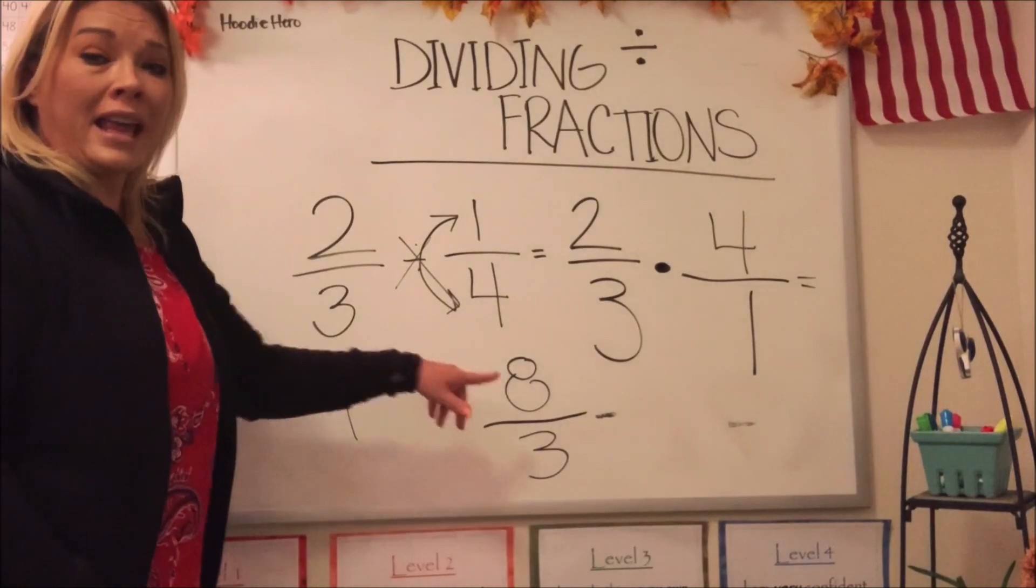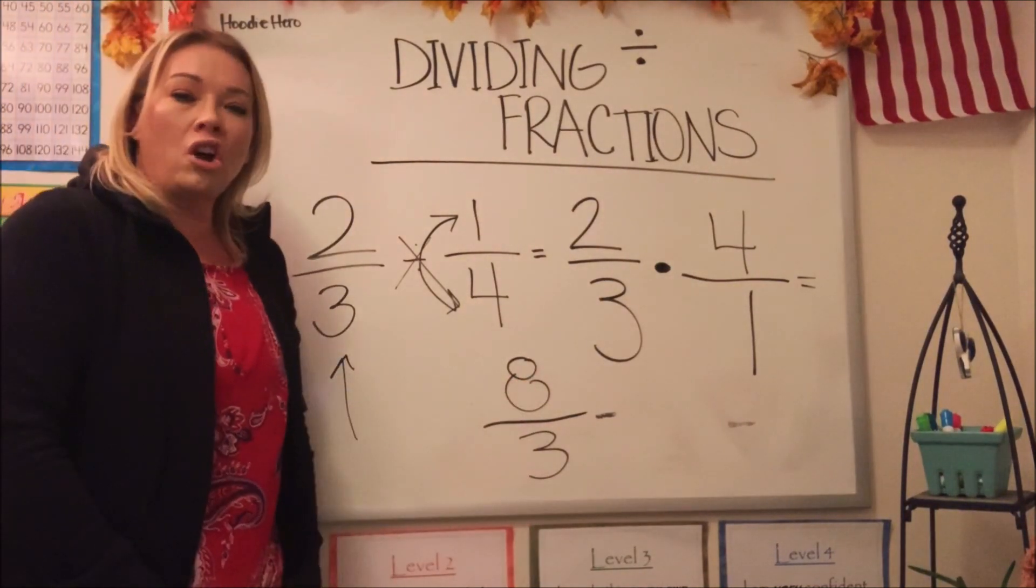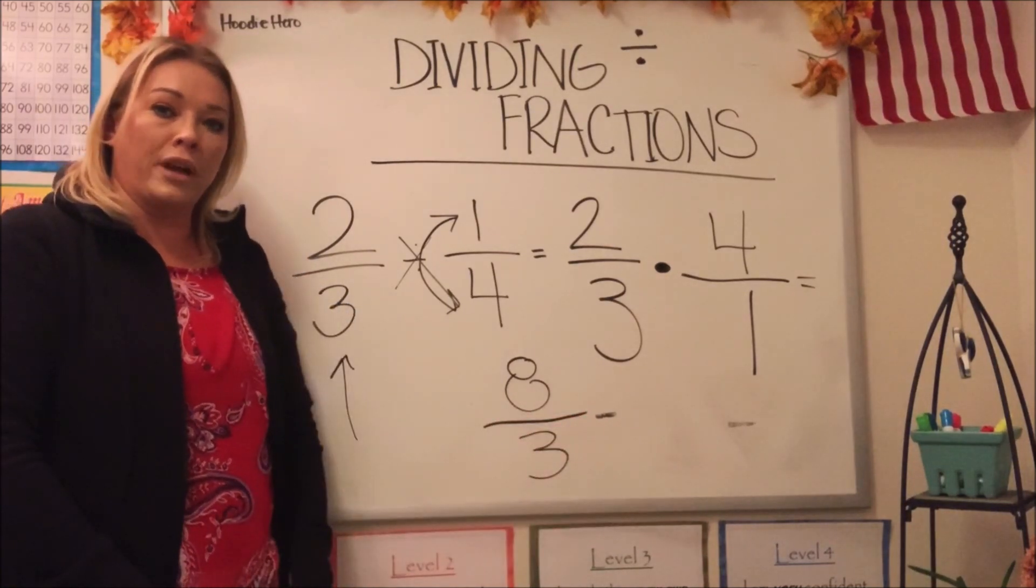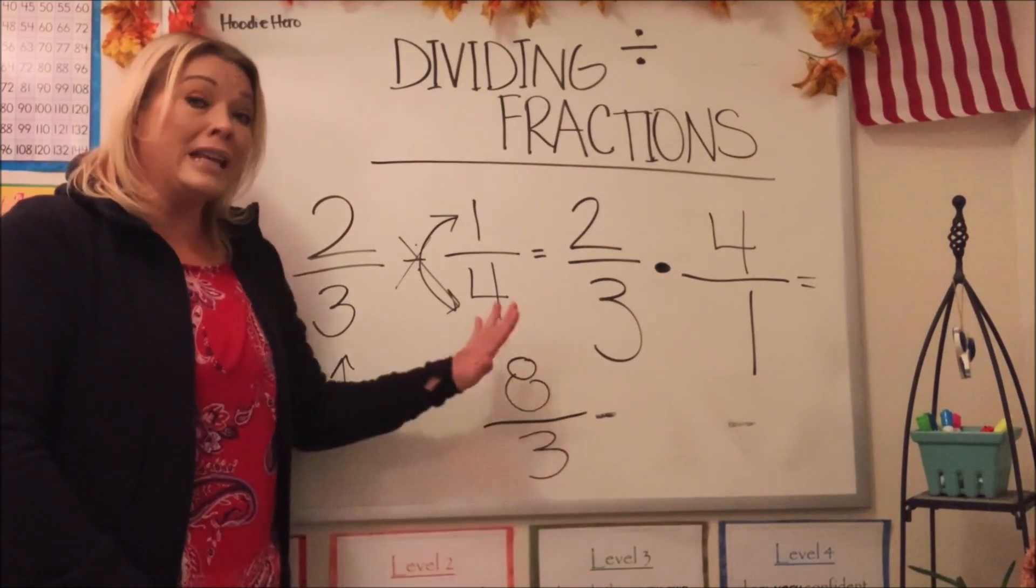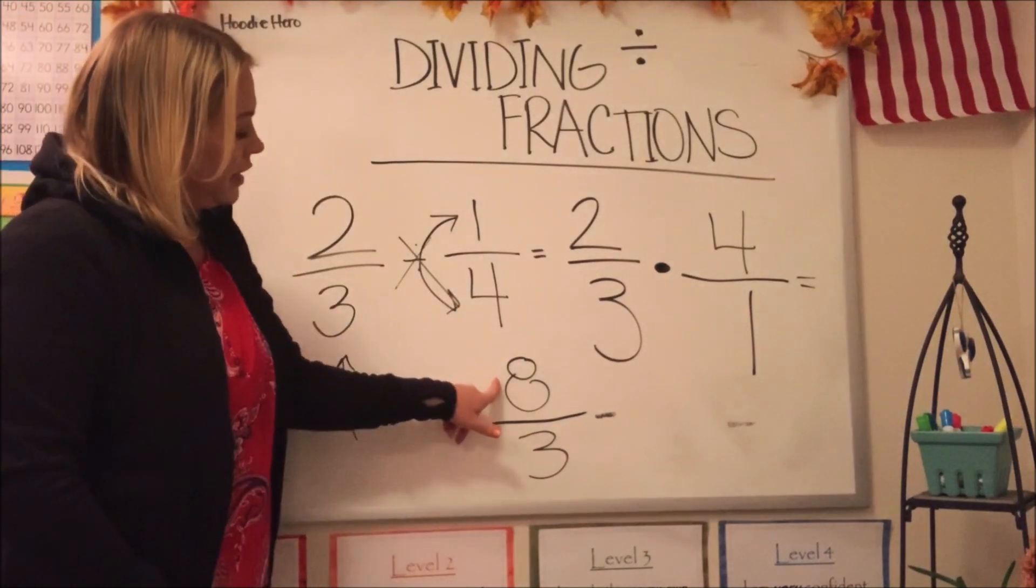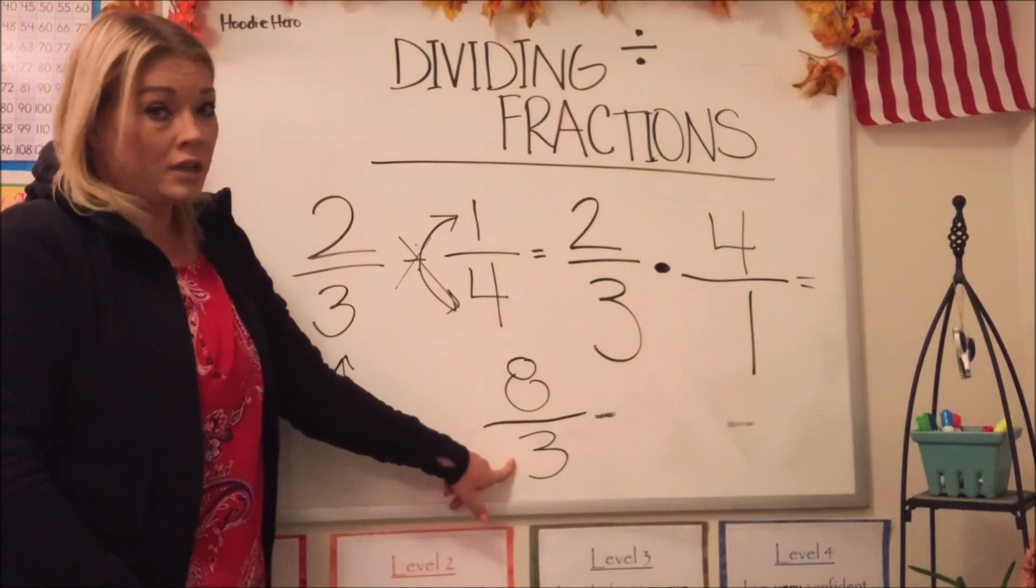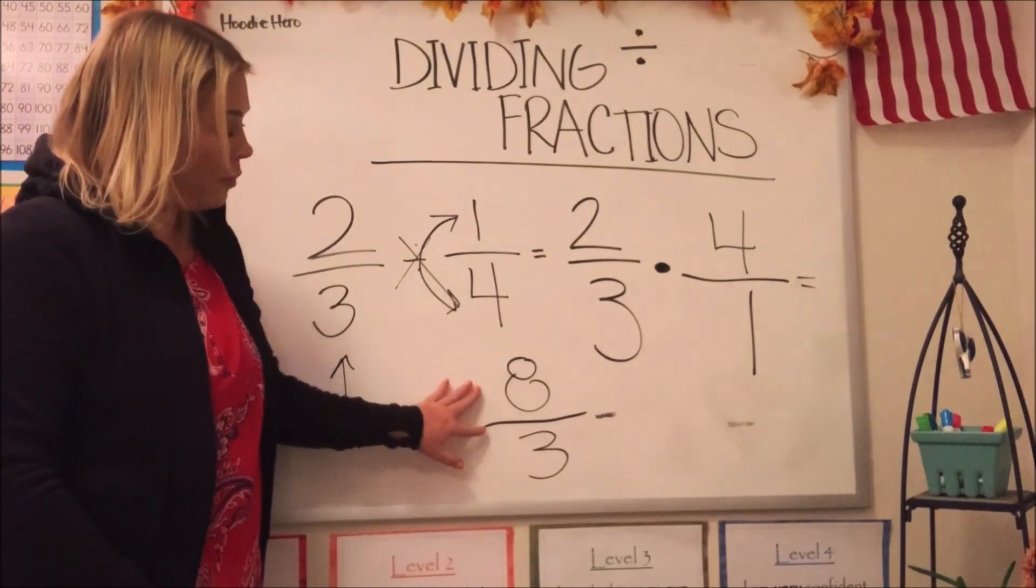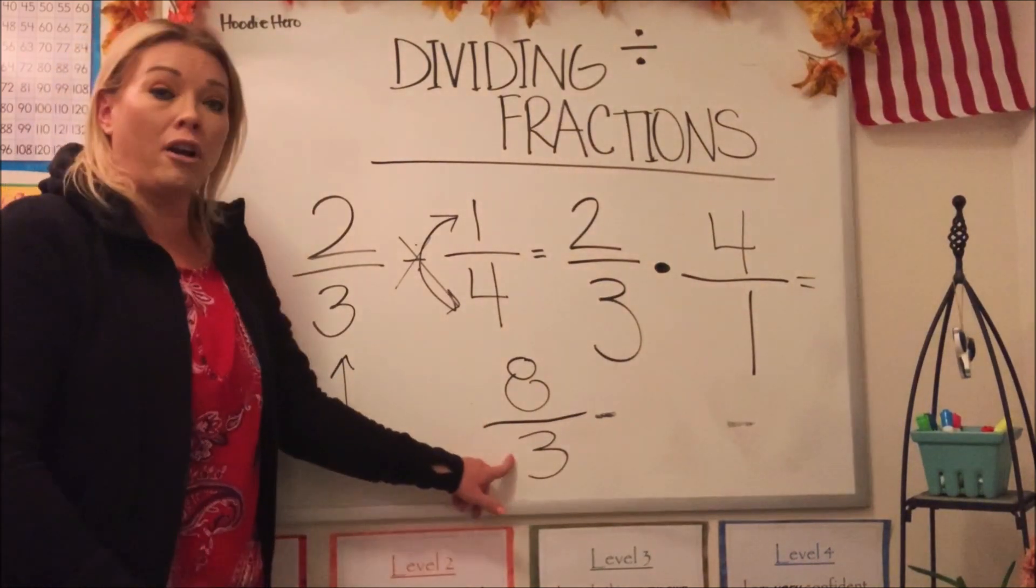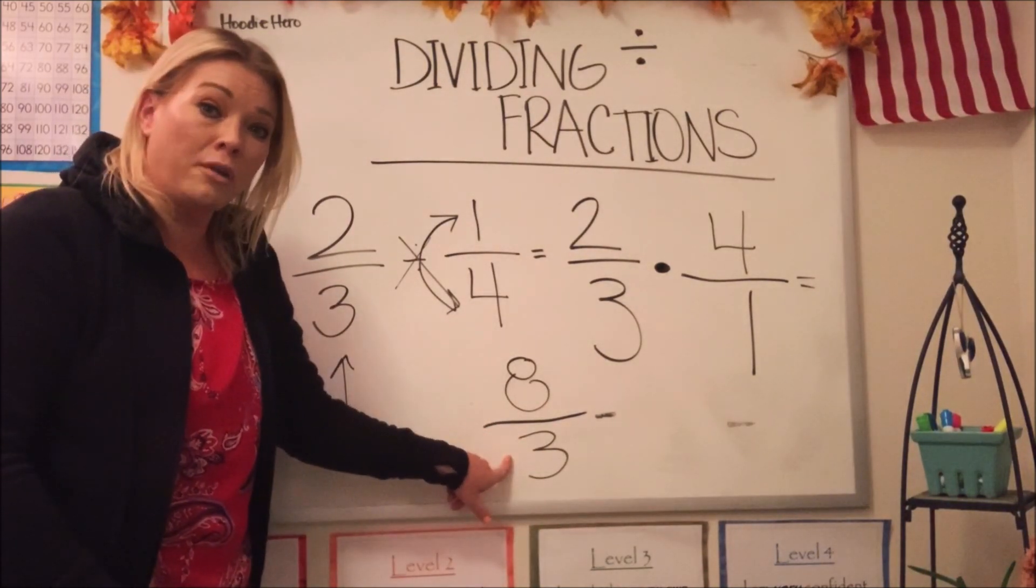Can we simplify eight-thirds? We can't because what is this fraction called? What's our answer called that we came up with? It's called an improper fraction because it doesn't make sense, does it? Can you take eight parts away if you only have three to begin with? You can't. So this is an improper fraction. The denominator always tells us the total number of parts. We can't take eight away if we only have three to start with.